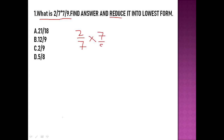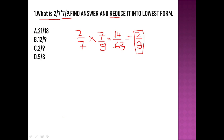7 times 7 is 49 — wait, 2 times 7 is 14 and 7 times 9 is 63, so we get 14/63. Then we reduce 14/63 to its lowest form: 14 divided by 7 is 2, and 63 divided by 7 is 9. So 2/9 is the lowest form of 14/63. Option C is the right answer.